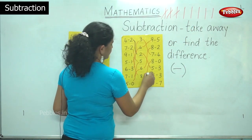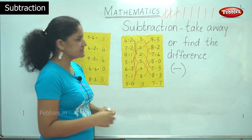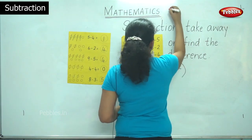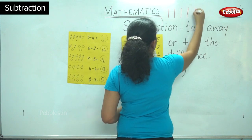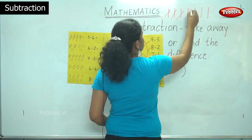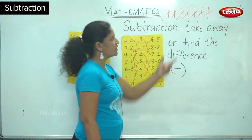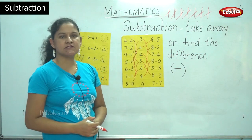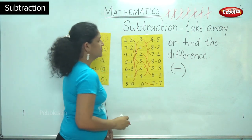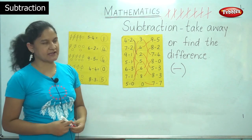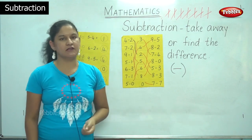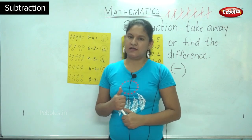And the last I have 7 take away 7, or 7 minus 7. So I have 7 sticks: 1, 2, 3, 4, 5, 6, 7. Now I don't have any sticks remaining. So my answer is 0. 0 means absence of something. So this is a simple method of subtraction. You can either use sticks, your fingers, or your mind to do subtraction when it comes to small numbers.